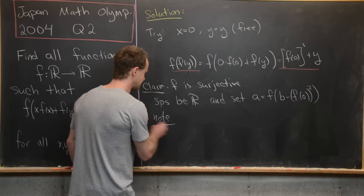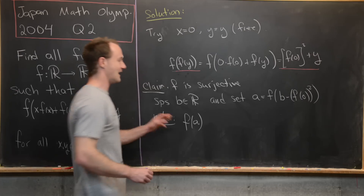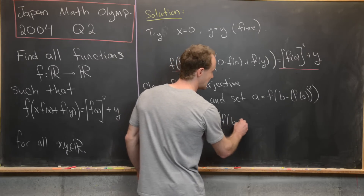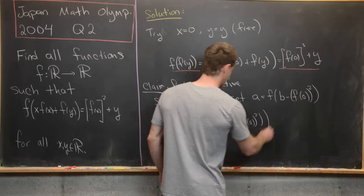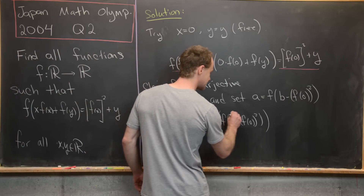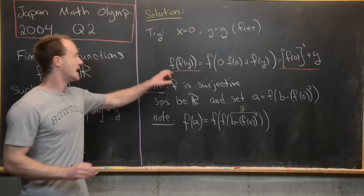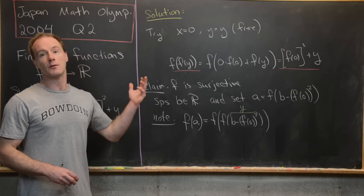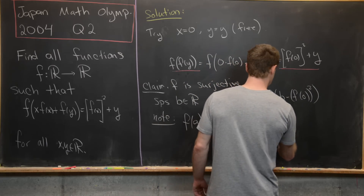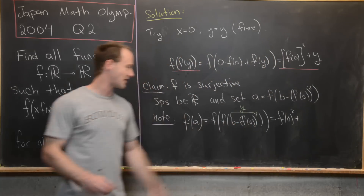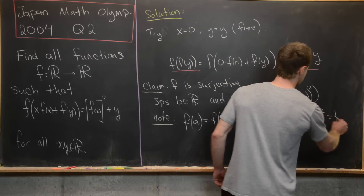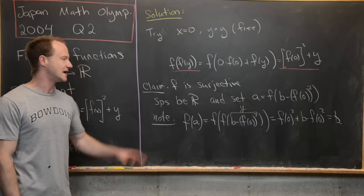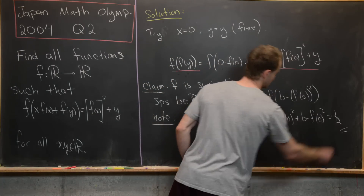If we evaluate f at this value a, we get f(f(b − f(0)²)). Using our earlier equation f(f(y)) = f(0)² + y with y = b − f(0)², this becomes f(0)² + (b − f(0)²) = b. So we've successfully found a pre-image for an arbitrary member of the codomain, proving f is surjective.